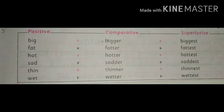Big — in the comparative degree, G is preceded by I, which is a vowel, so we double the last letter G and add ER, giving us bigger, and for superlative, G is doubled and EST is added, giving us biggest. Same pattern: fat, fatter, fattest; hot, hotter, hottest; sad, sadder, saddest, and so on.